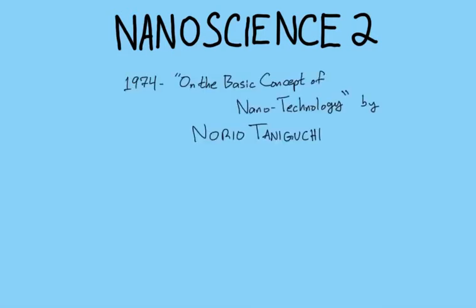In 1974, this guy named Norio Taniguchi published a scientific paper called 'On the Basic Concept of Nanotechnology.' This paper was about how you could make things at the level of molecules. It was the first time that the word 'nanotechnology' was ever used — so he coined it.